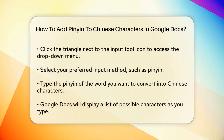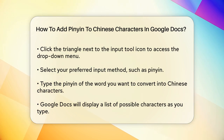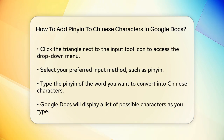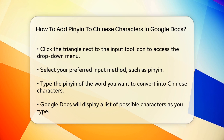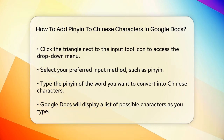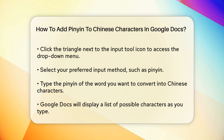To type Chinese characters using pinyin, start typing the pinyin of the word you want. For example, if you want to type the character for "white," you would type "bai." As you type, Google Docs will show you a list of possible characters. You can select the correct character by typing the corresponding number, or by clicking on it.